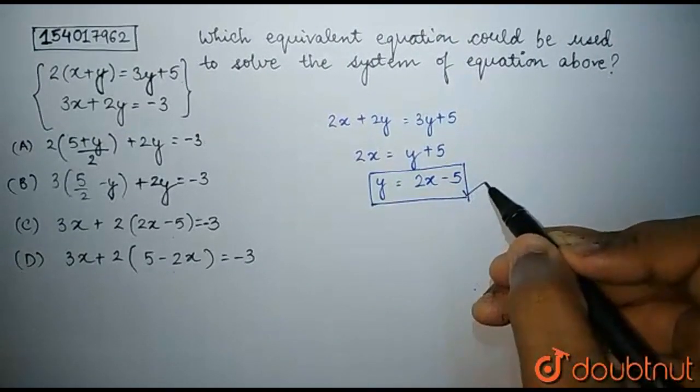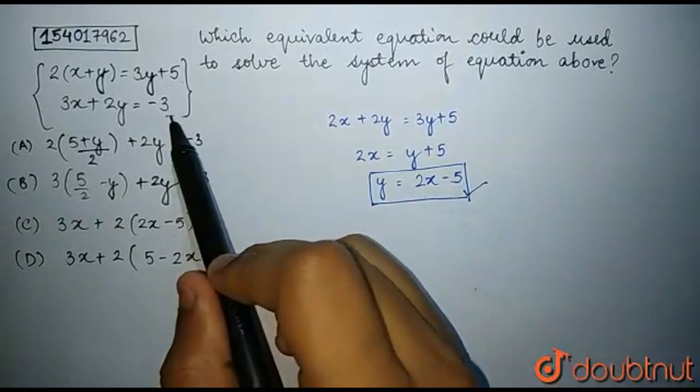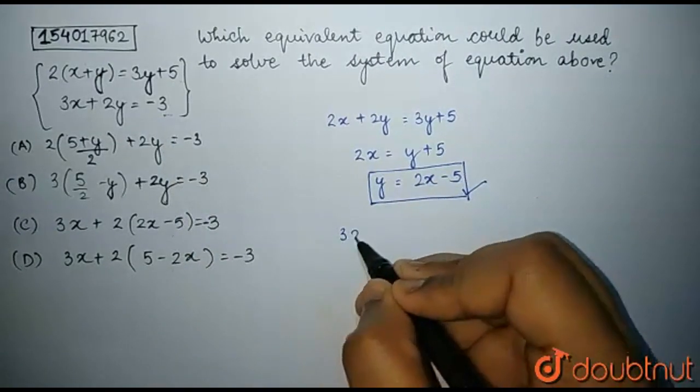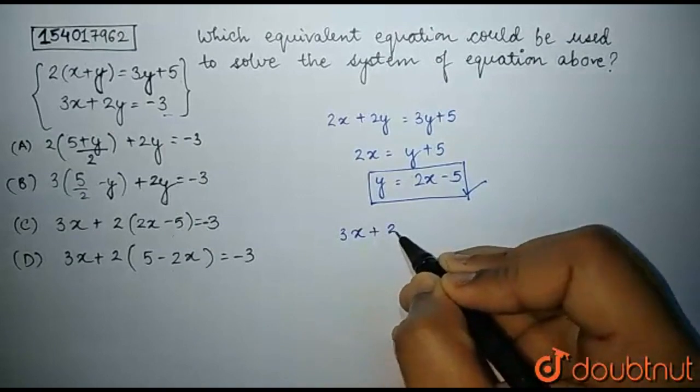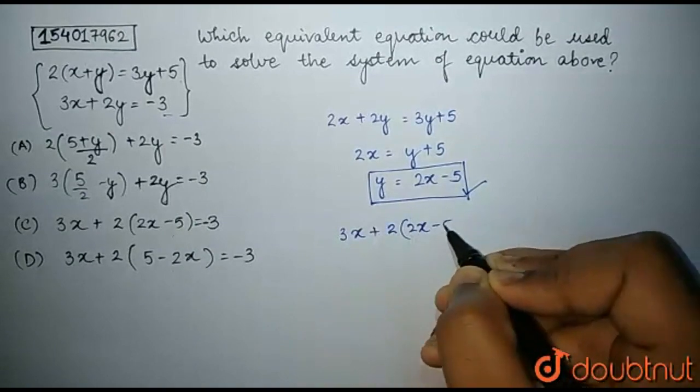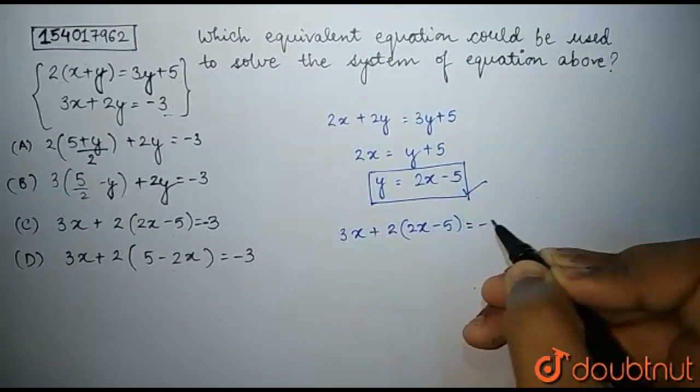Now, substituting this value of y in the second equation, we get 3x plus 2 times 2x minus 5 is equal to minus 3.